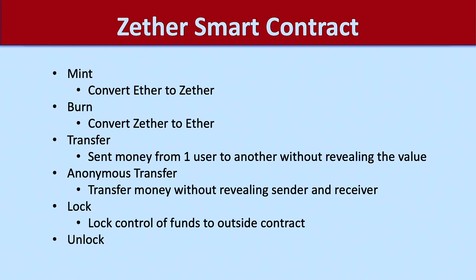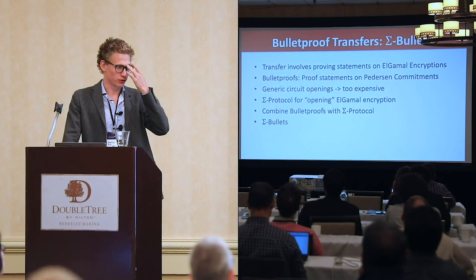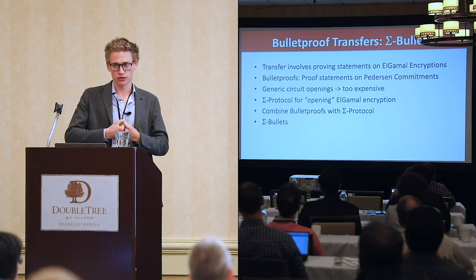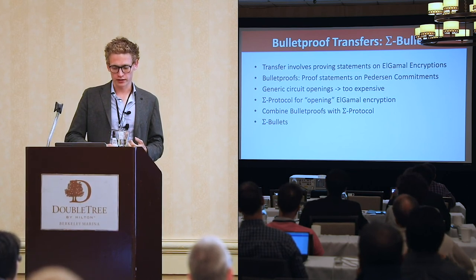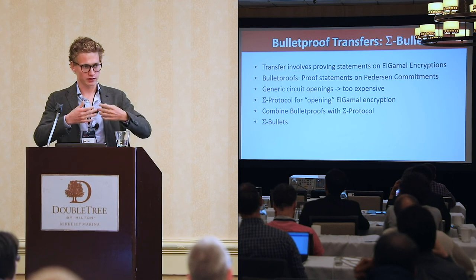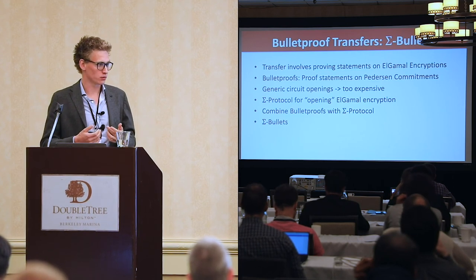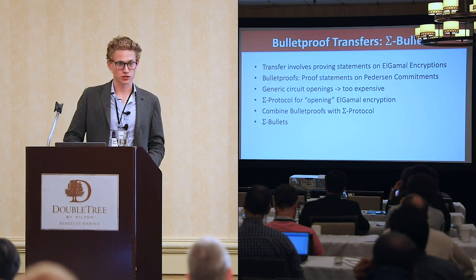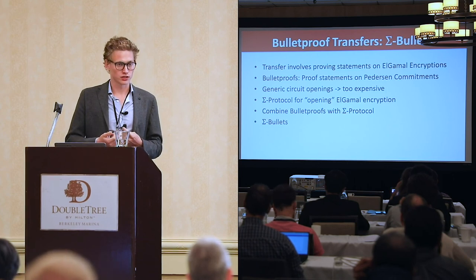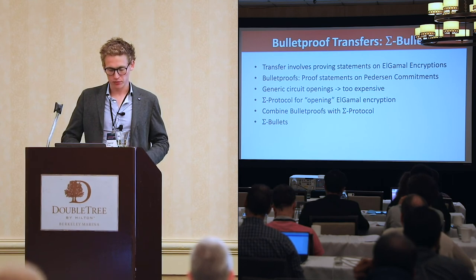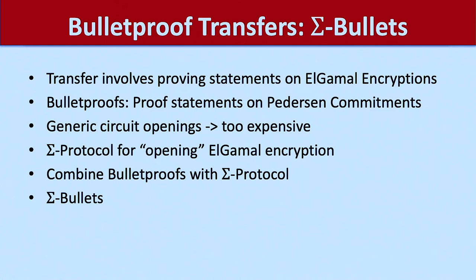How do we do these zero-knowledge proofs? It's a variation of bulletproofs. Opening a commitment is straightforward, but opening an ElGamal encryption is harder — non-interactively opening it would require giving you the secret key, which I don't want to do because I need to use the encryption later. So we use so-called Sigma protocols to open the ElGamal encryption. We did a slight modification to bulletproofs which allows us to combine these Sigma protocols efficiently with bulletproofs — we call it Sigma Bullets.